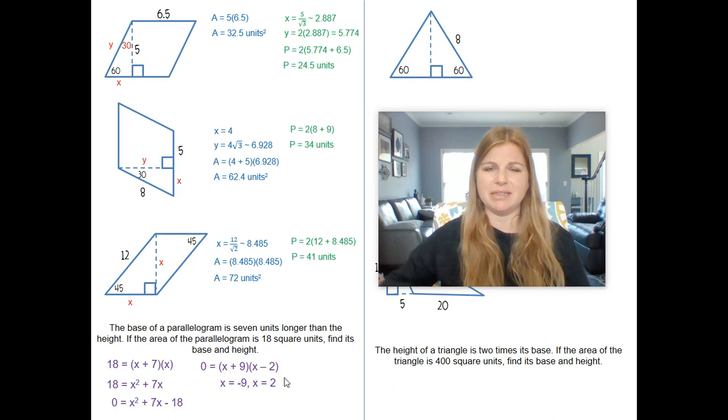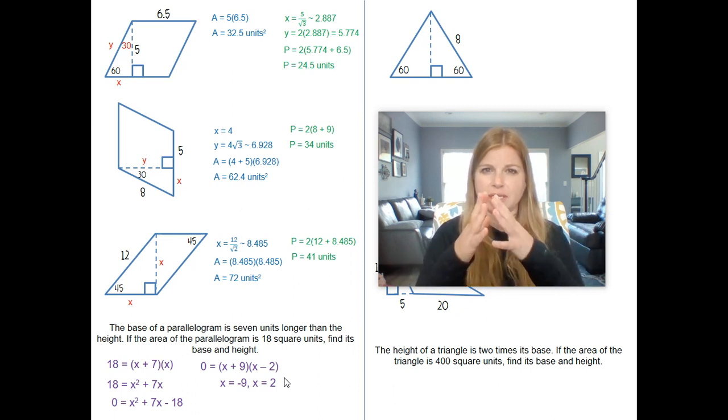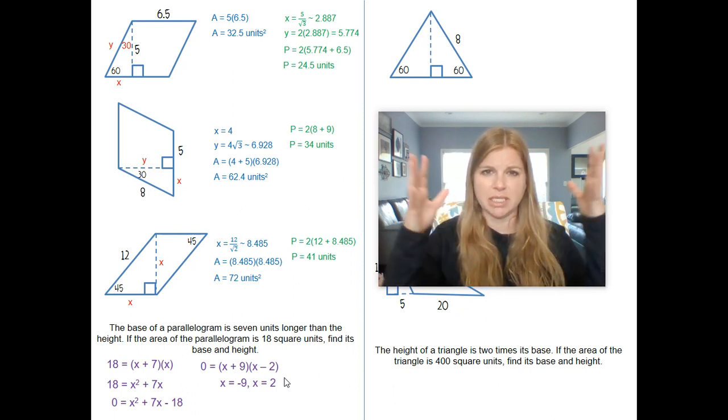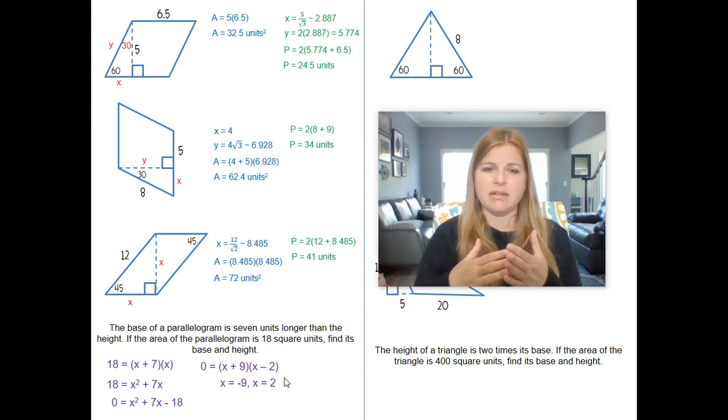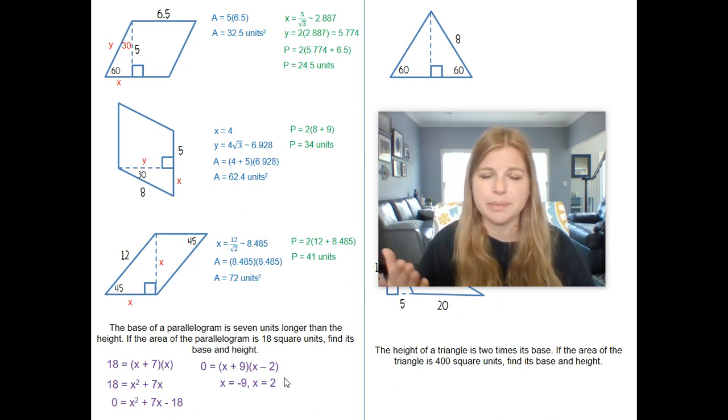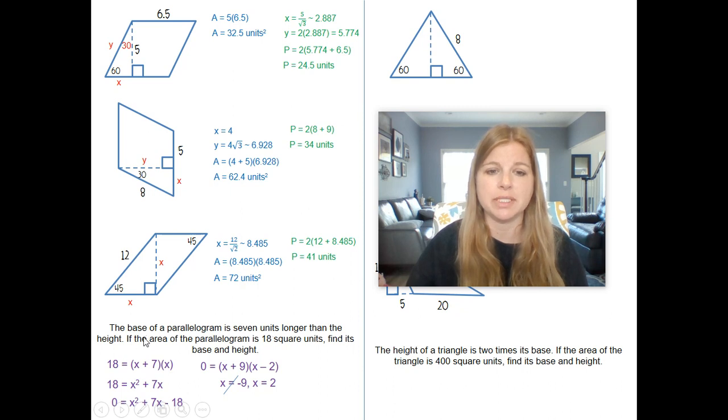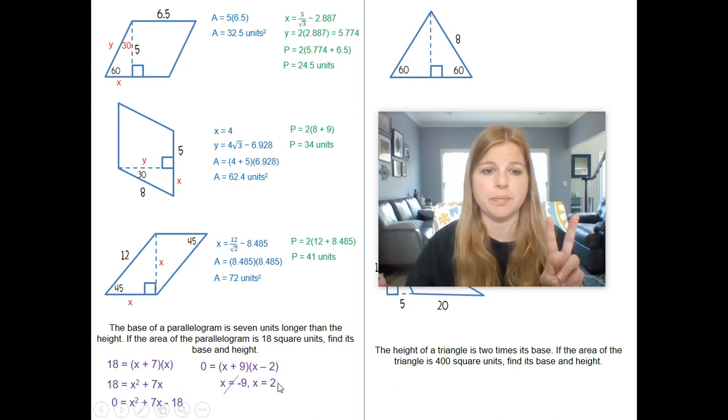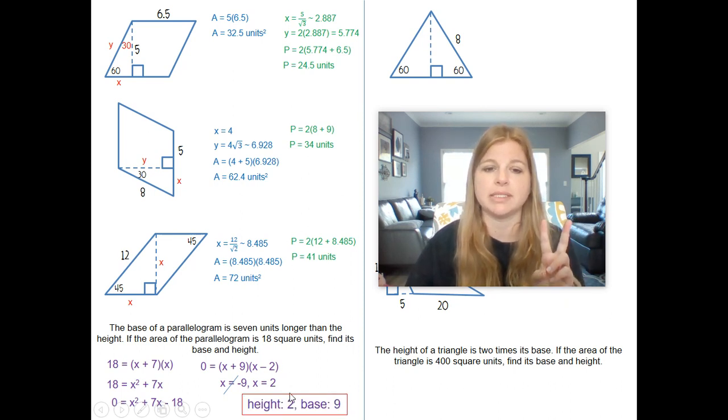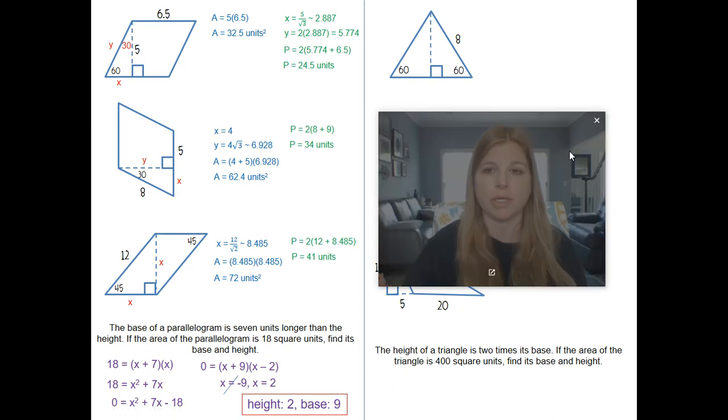But think about it. Negative could never be an answer if when you substitute it in, you get a negative length. And here, I can't have a length of negative 9 and then double it and have another side of, let's say, I'm sorry, add 7 to it, I'd still be in the negative. So the negative 9 is actually not part of the solution. So this means it says the base of a parallelogram is 7 units longer than the height. So that means that X is the height, so the height is 2, and the base would have to be 9 because it's 7 units longer. And it makes sense because 2 times 9 is 18. It all works out.